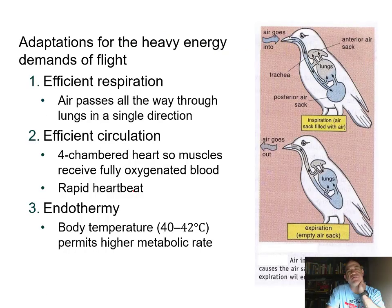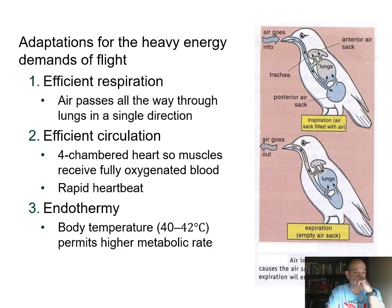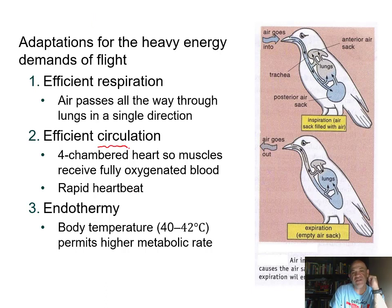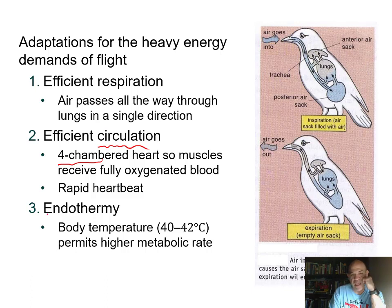Adaptations needed for flight include an efficient respiratory system, since those muscles require a lot of oxygen to generate ATP. You also need efficient circulation—no mixing of oxygenated and deoxygenated blood—so birds have a four-chambered heart. And birds have endothermy, which we don't see in modern reptiles. Birds tend to have a higher body temperature than mammals, and a higher temperature means a higher metabolic rate to power those muscles.